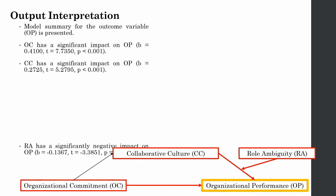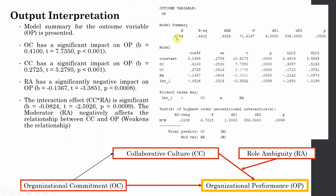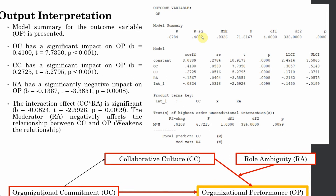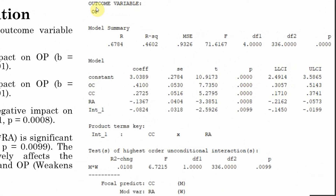The next summary table shows organizational performance as the outcome, with all variables influencing it. There is also an interaction term of CC and RA because role ambiguity moderates this relationship. Organizational commitment has a significant impact on OP — the p-value is less than 0.05 and there is no zero in the confidence interval. Role ambiguity also has a significant impact on organizational performance, with a p-value less than 0.05.